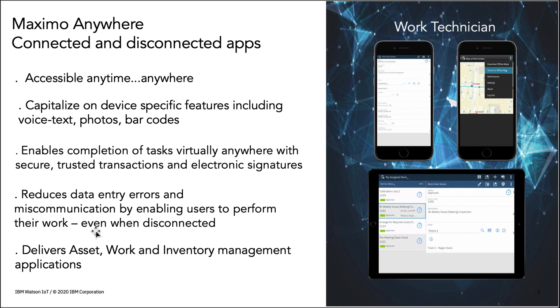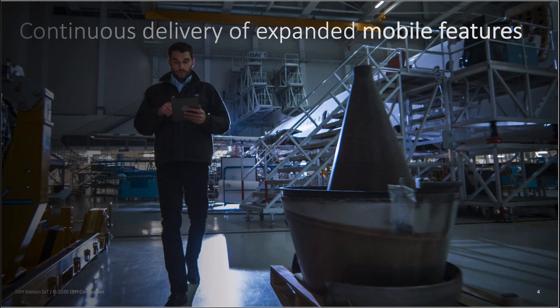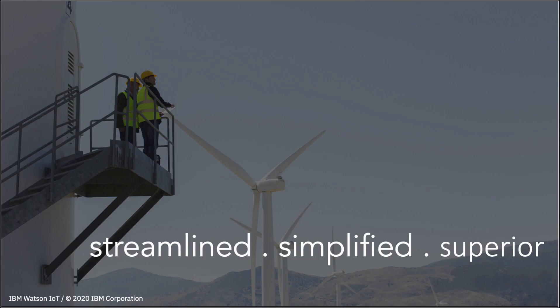Maximo Anywhere provides nine applications focused on asset, inventory, and work management, and five industry solution applications. While we provide this extended feature set, we are continually driven to deliver more mobile features — features requested by our clients and business partners. And that drive has led to this new Maximo Anywhere 764 release.